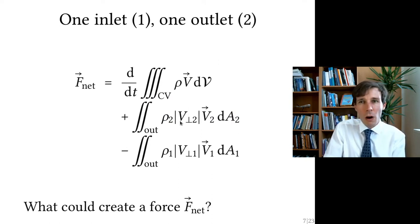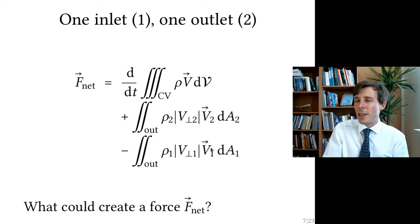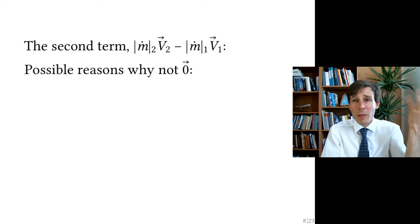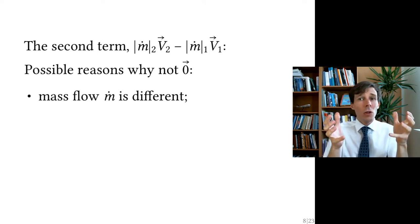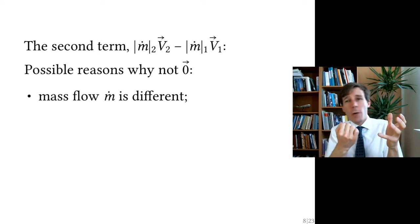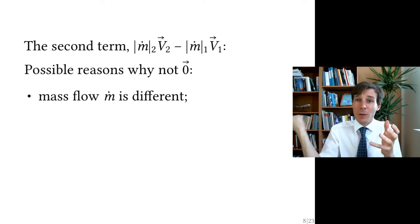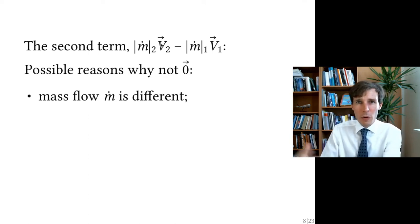What about the other two terms? If we say the first term is zero because the flow is steady, what could cause a non-zero force? There are many reasons. The first is that the mass flow is different — for example, a tank with no inlet that is leaking: the outgoing mass flow is greater than the zero incoming mass flow. Because of this, even with zero inlet velocity, you will have a net force applying on the flow.